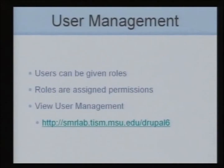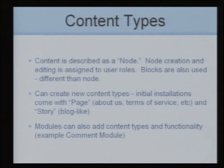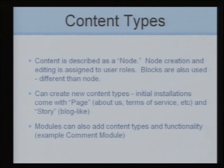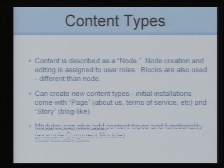Content types: you can create your own. Contents are described as nodes in this system, and there are also things called blocks, which are more like advertising widgets — users don't add content to a block. The two content types that ship with Drupal are pages — more static things like 'About Us' that you don't change often — and stories, which are blog-like things where people post repeatedly. You can create other content types with custom fields.